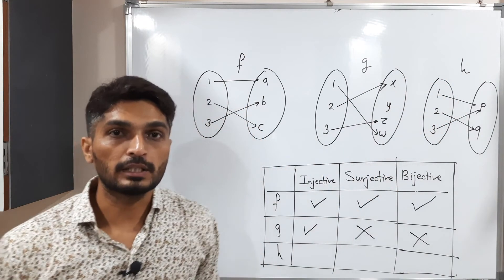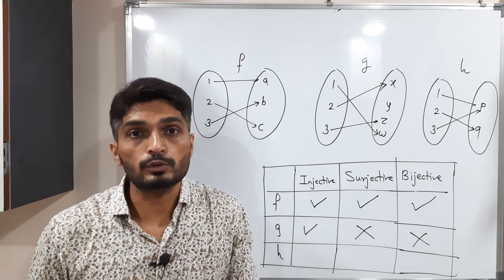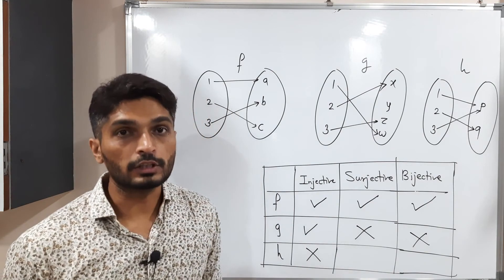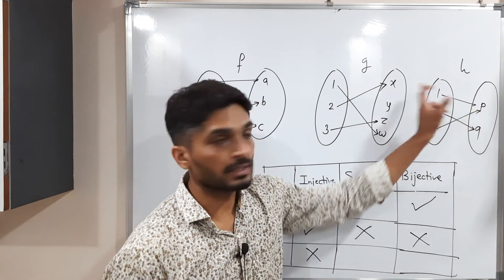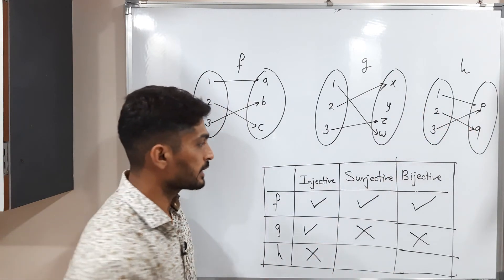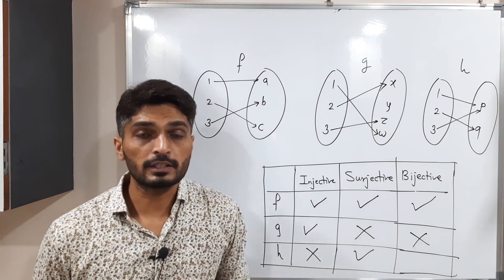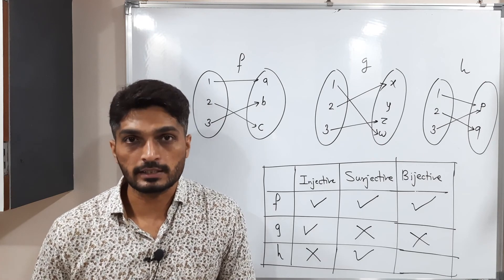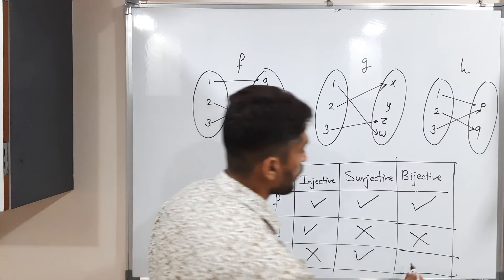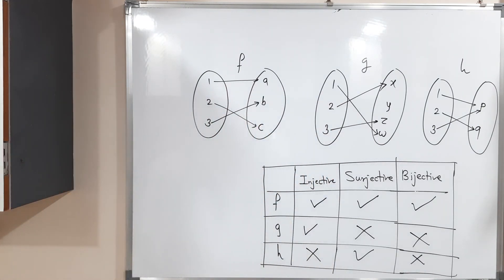In the last example, 1 and 3 both have the same image p — two arrows going to a single point — so the function is not injective. However, p has a pre-image and q has a pre-image, so every element of the co-domain has a pre-image, making it surjective. Since it is not injective, the function is not bijective. Make a screenshot if you want. Thank you, bye bye.